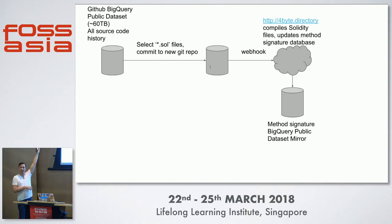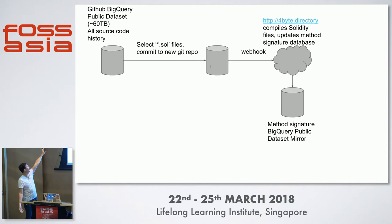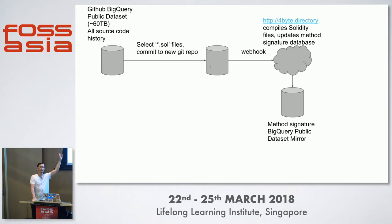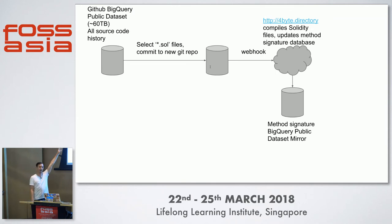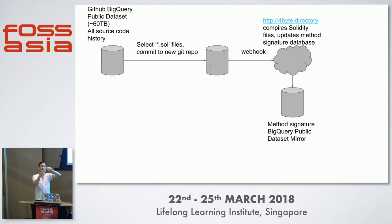I also looked at the GitHub BigQuery public dataset — all of GitHub history in BigQuery, about 60 terabytes. I queried it to find all Solidity source files. Piper Merriam gave me a webhook where I can create a new GitHub repo, copy all existing Solidity source files, and when I commit them his database pulls in the new files, compiles them, updates the database, and the signatures get updated in BigQuery automatically. This is effectively a serverless update of the database by crawling the synchronized GitHub dataset.